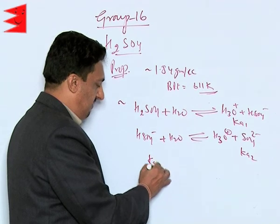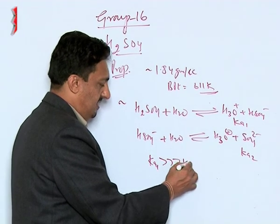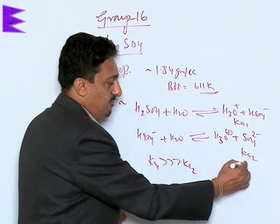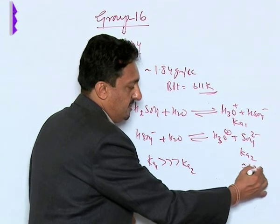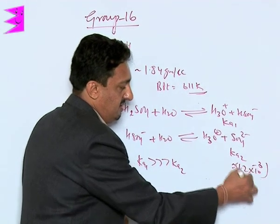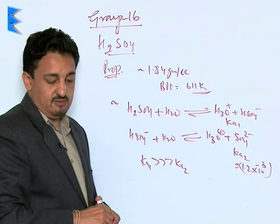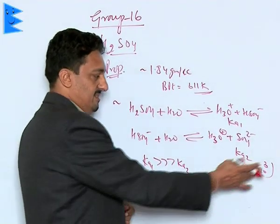Now what we find is Ka1 is very very large than Ka2. See Ka2 values approximately is 1.2 into 10 to the power minus 3, in some books it is minus 2 like in NCERT this is minus 2.